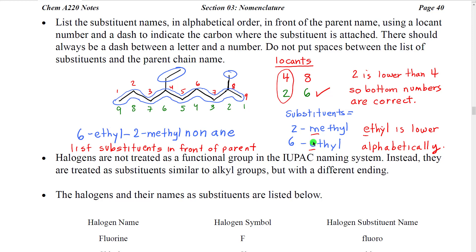To build this name, we have a nine-carbon chain which would be nona. There's no unsaturation so we use -ane for our ending and we have no functional groups, so it would be nonane. Attached to that nonane chain would be an ethyl at carbon six and a methyl at carbon two. So the name is 6-ethyl-2-methylnonane. Notice the dash between ethyl and the two locant number for the methyl.